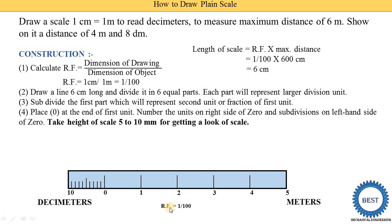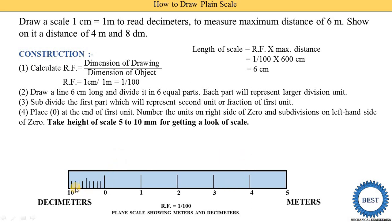The RF of 1 upon 100 indicates that for 1 meter, we draw a line of length 1 centimeter. We also write the title: 'Plane scale showing meters and decimeters.' Now, we indicate 4 meters and 8 decimeters: from 0 to 4 is the meter reading, and 8 decimeters is located by counting 8 subdivisions from 0. We draw projection lines and indicate 4 meters and 8 decimeters.